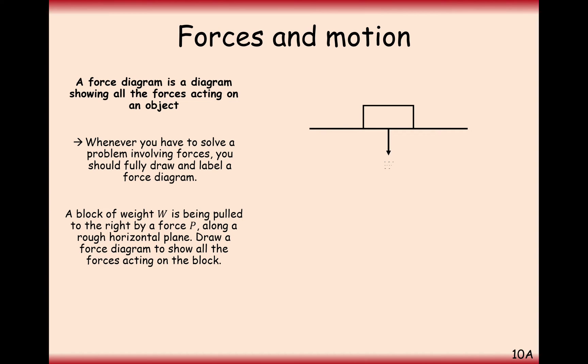Now, if we have a block with a weight W, we'll obviously have an arrow pointing downwards with W on it for the weight, and symmetrically we'll have an upward pointing arrow of R.